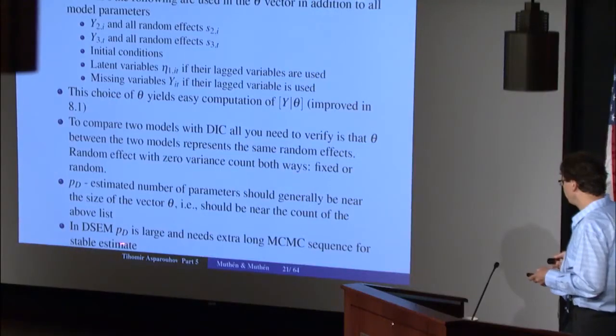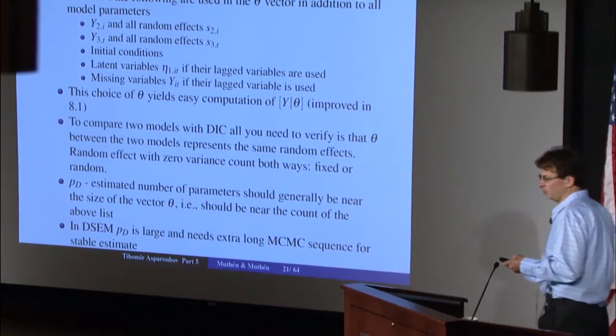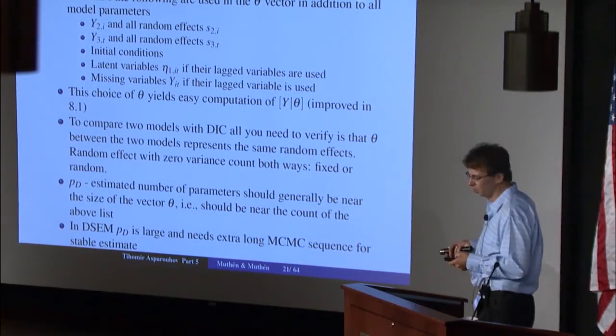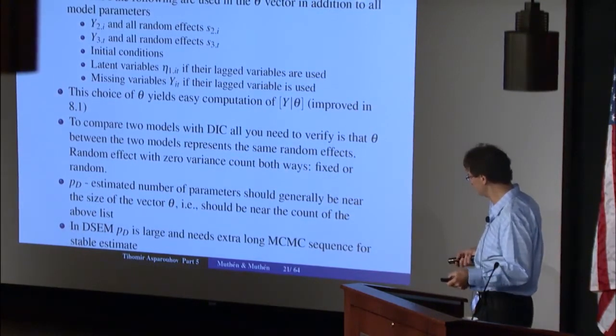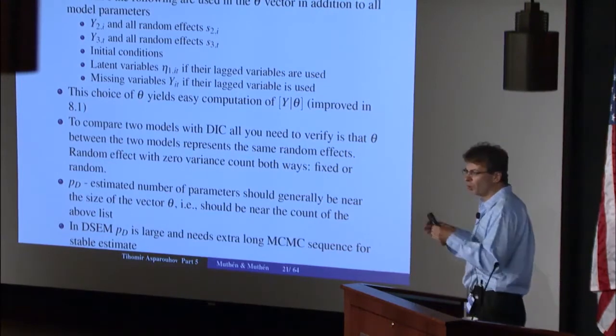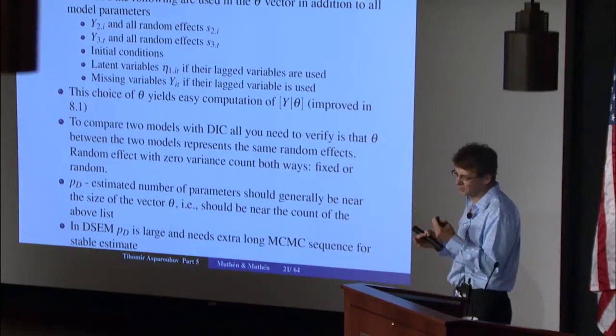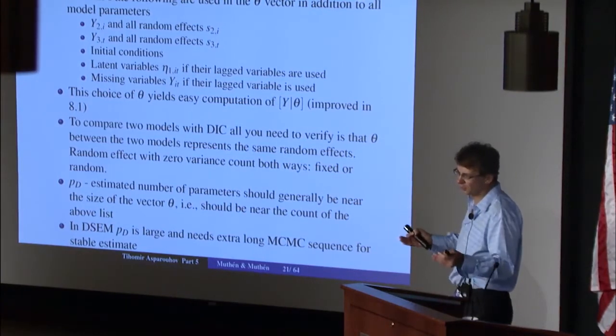When PD is large, you should expect that DIC convergence will be slow, and you need to ensure enough iterations to get a stable estimate. Even without a perfectly stable estimate, in most cases you'll be able to compare models because differences between DICs will be large enough that a very precise estimate isn't needed. In certain cases, though, you will probably need to run very long MCMC sequences to get stable DIC estimates.